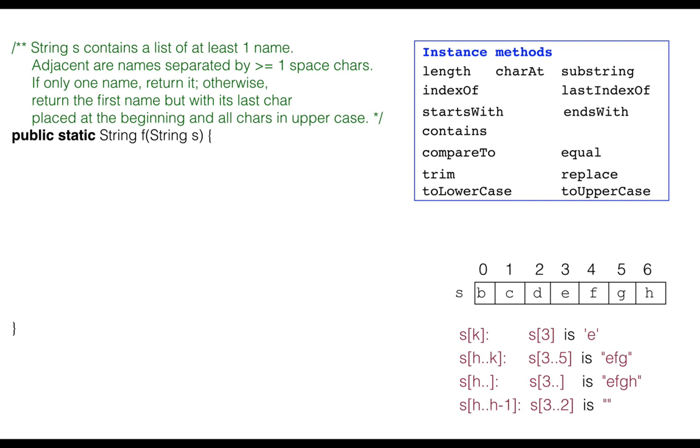Here's the spec. S contains a list of at least one name. Adjacent names are separated by one or more space characters. If there's only one name, return it. Otherwise, return the first name but with its first character placed at the end, and with all characters in uppercase.